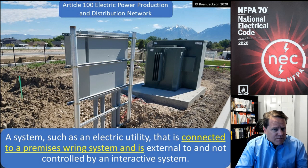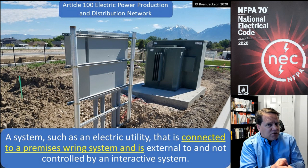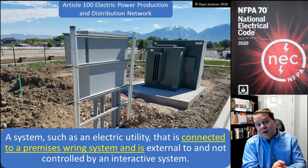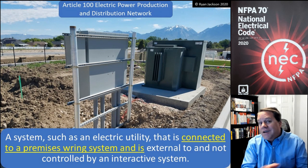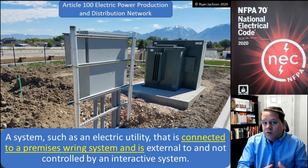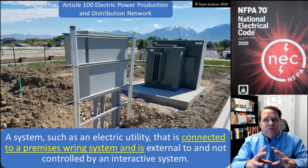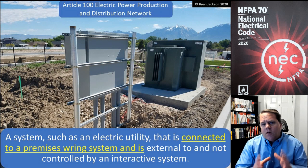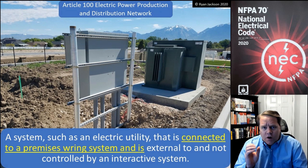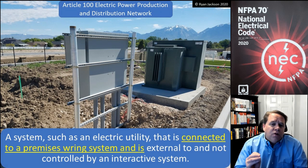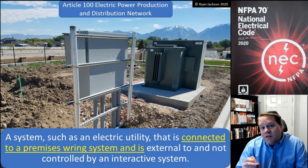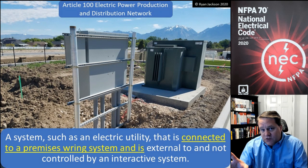Now we're getting into that with the electric utility. Is this really an electric utility? Are they regulated by a public service commission? Some were yesterday and they're not anymore. So it's getting a little bit tricky and we're having to adapt the code to the changing world. There are some areas in the code where instead of using the term utility, we use the term electric power production and distribution network — mainly in the back of the code in chapter seven.